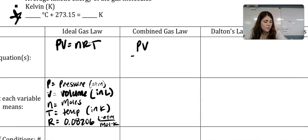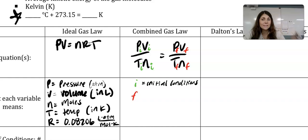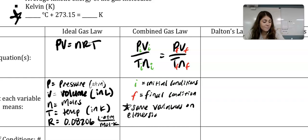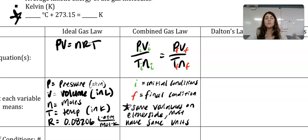The combined gas law looks like P₁V₁/T₁N₁ equals P₂V₂/T₂N₂, where one side represents the initial conditions and the other represents the final conditions. The same variables appear on either side and must have the same units to cancel. Temperature must be in Kelvin, but pressure and volume can be in any unit as long as both sides use the same unit for each variable.